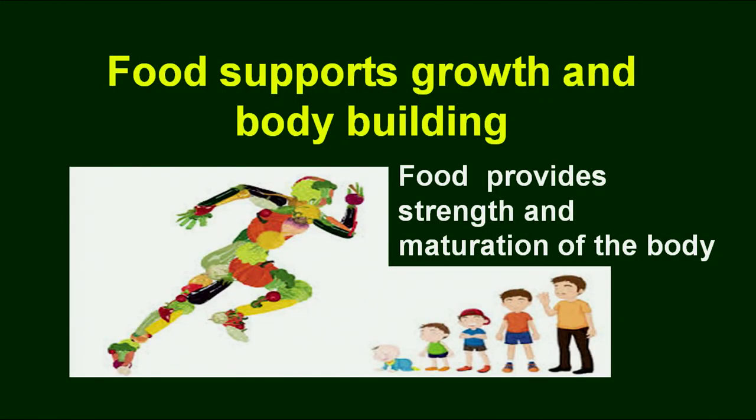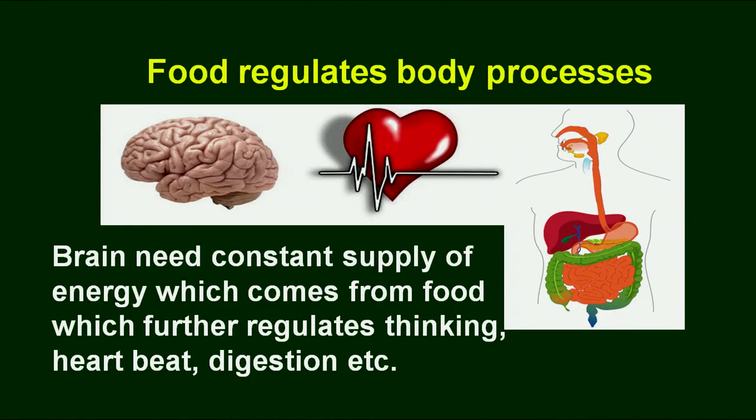Everybody wants to have a good body, but certain kinds of foods are especially required to provide strength and maturation of the body. In this picture you can see how a child grows into adulthood, and at every stage specific nutrients and specific foods are required. At every age you require specific foods in terms of specific nutrients for growth and development.